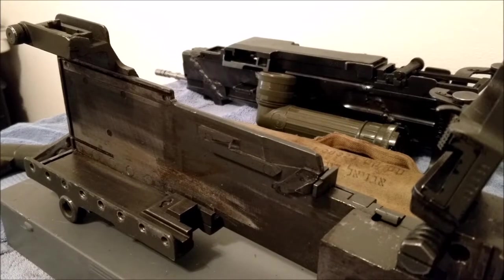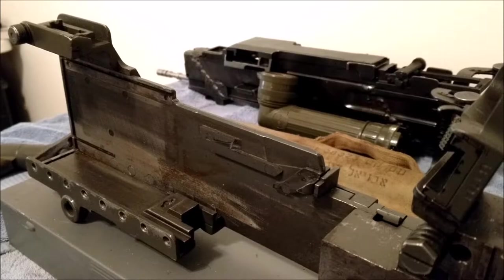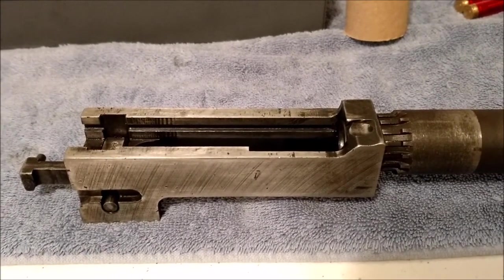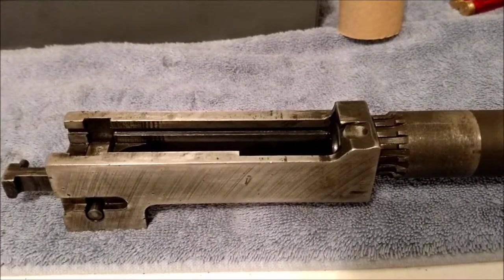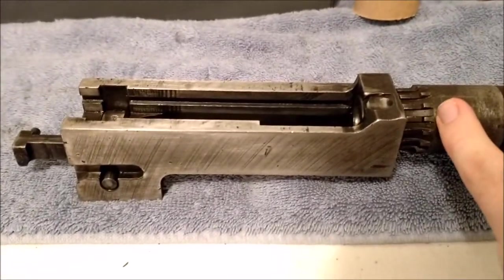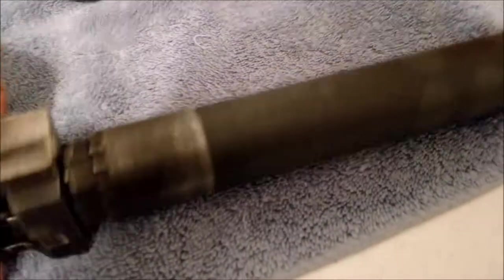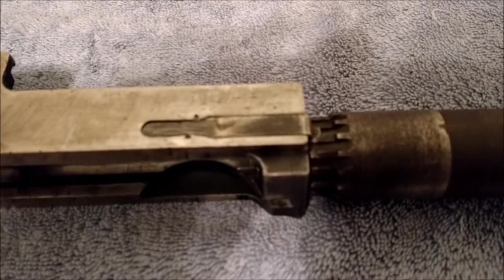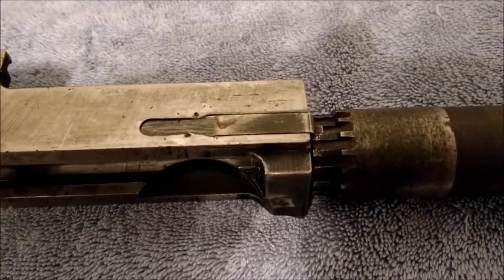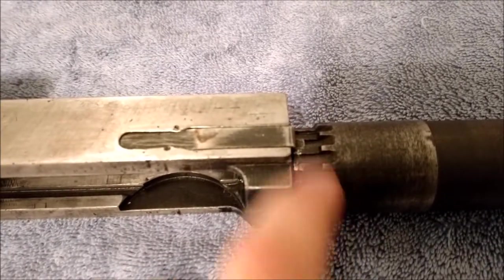Then we'll do a function test. This is the barrel and barrel extension. The 1919 is actually a short recoil gas-assisted weapon. The barrel screws into the extension here, it's threaded, and it has a lock spring right here. You can see the notches on the actual shank of the barrel.